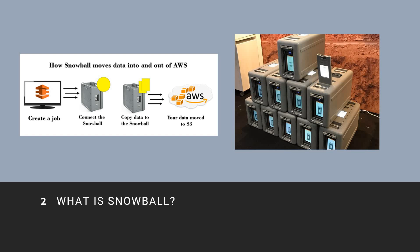What is a Snowball? Here is a diagram of how Snowball moves data into and out of AWS. The phases are: create a job, connect to the Snowball, copy data to the Snowball, and your data has been moved to S3.